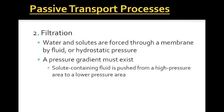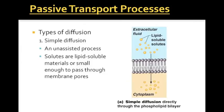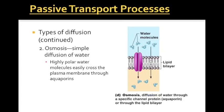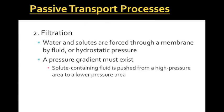The last passive transport process is filtration, which is basically when water or solutes are forced through the plasma membrane by some sort of pressure. Mark in your mind that filtration equals pressure — a pressure gradient must exist for something to cross the plasma membrane. In review, the four types of passive transport are simple diffusion, osmosis, facilitated diffusion, and filtration, and none of them require ATP.